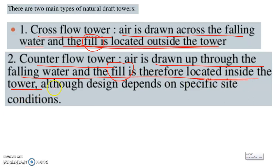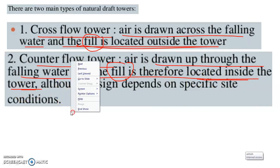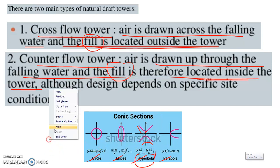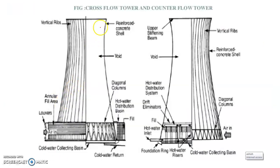Although design depends on specific site conditions. You have seen conic sections — circle, ellipse, hyperbola, and parabola. The hyperbola conic section is the important one here. A hyperbola produces this type of curved structure, and that is why it is called a hyperbolic cooling tower.